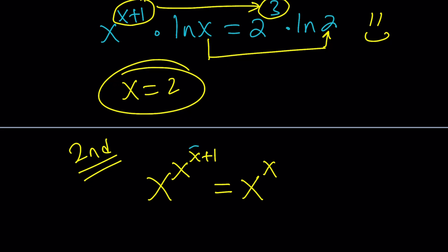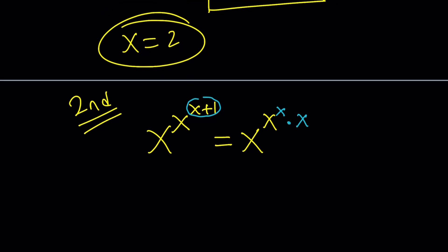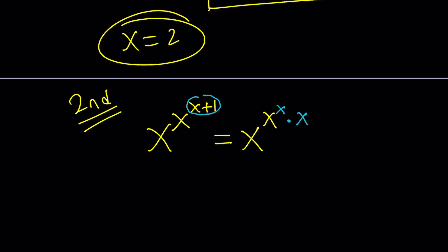Here's what I want to do. I want to break down the x to the power x plus 1. Since the exponents are added, that indicates multiplication. So, I can write this as x to the x times x to the power 1, which is just x. So, I basically turned this into that. Now, I have the following and this is equal to 256.